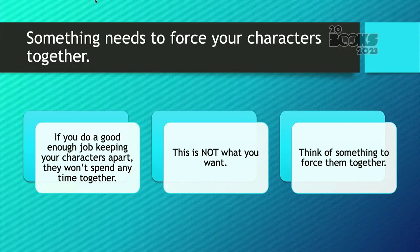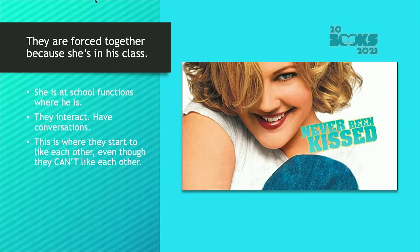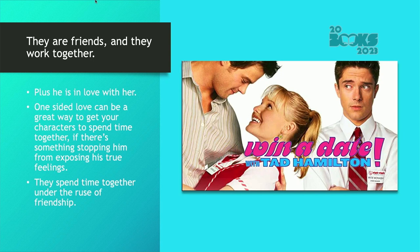Something needs to force your characters together. If you do a good job keeping your characters apart, they won't want to spend a lot of time together — but they have to spend time together in a romance novel. In Never Been Kissed, they're forced together because she's posing as a student and has his class, so they go to school functions, interact, and have conversations — this is where they start to like each other even though they can't. In Win a Date with Tad Hamilton, they are friends and they work together, and one-sided love is a way to stick characters together. He tries to find ways to spend time with her even though he can't tell her he's in love with her — they spend time together under the ruse of friendship.